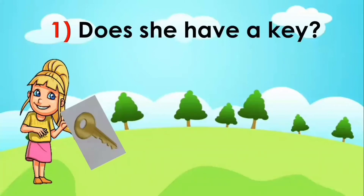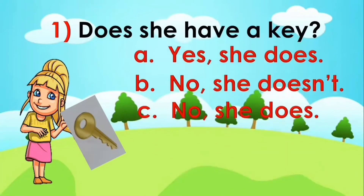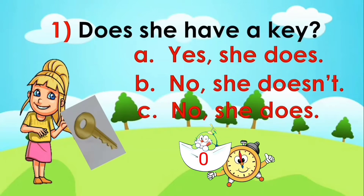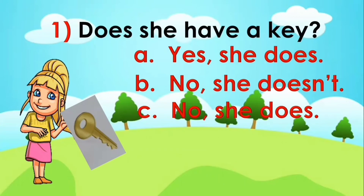Does she have a key? A: yes, she does. B: no, she doesn't. C: no, she does. Your time starts now. Time is off. The answer is letter A.